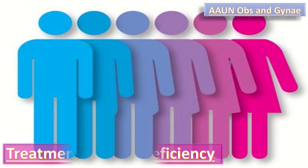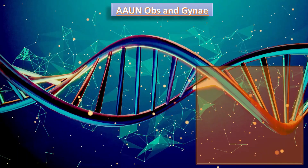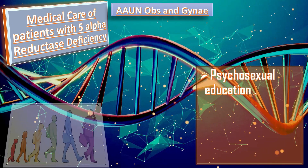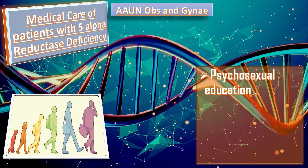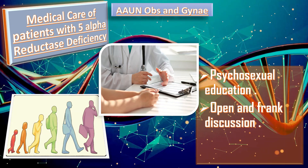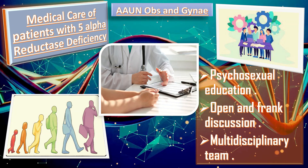Regarding treatment, we discuss medical and surgical care. Caring for patients with 46XY disorder of sex development like 5-alpha reductase deficiency requires parental — and when appropriate, patient — psychosexual education regarding the specific developmental abnormalities found on physical examination, contrasted with normal sexual development. This education should include an open and frank discussion of what is known and not known about the long-term effects of gender assignment, including gender identity, gender role, and sexual satisfaction. These discussions should begin as soon as ambiguous genitalia are discovered and are ideally performed by a multidisciplinary team including pediatric endocrinology, pediatric urology or surgery, genetics, and mental health.